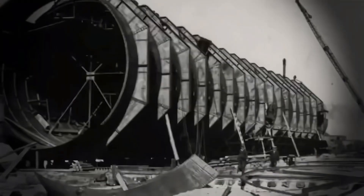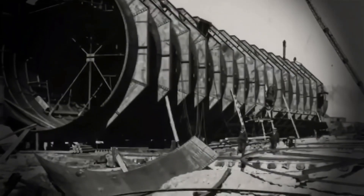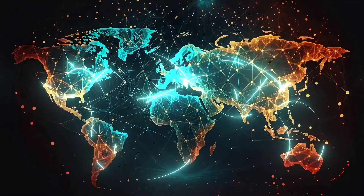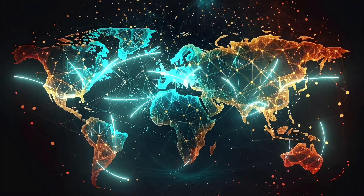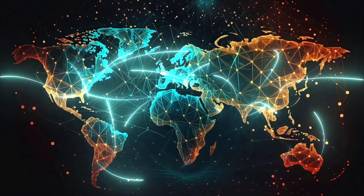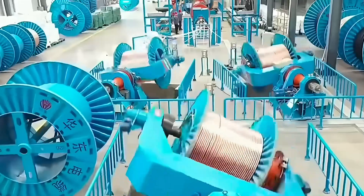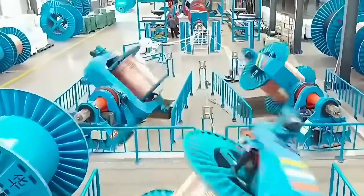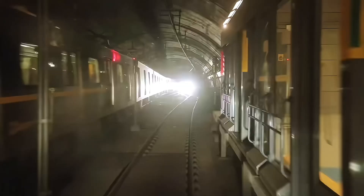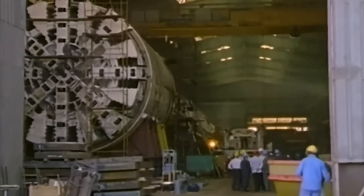The first underwater tunnels were built in the late 19th century, and today there are approximately 200 underwater tunnels distributed around the world. Although some are used to supply water and electricity, most are designed to accommodate road or rail connections. But how are these megastructures built? Join me to discover it.